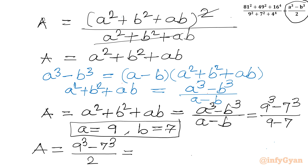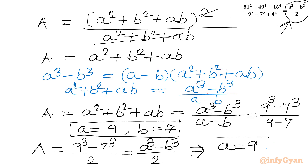By comparing both sides, it is (a³ - b³)/2 as per our given problem's right-hand side. So the conclusion is a = 9 and b = 7. This brings the end of this video — do not forget to like, share and subscribe. Bye bye, good luck, take care!